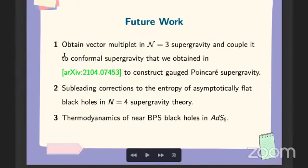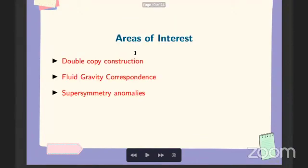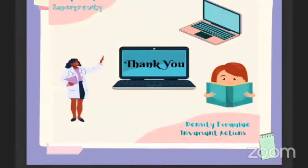For future work, and these are some ongoing work as well. So we have in this recent paper, we have constructed N equals 3 conformal supergravity action. Now currently we have obtained vector multiplet and we are trying to couple it with conformal supergravity action to obtain N equals 3 Poincare supergravity action. Other than that, we are also working on the subleading corrections to the entropy of asymptotically flat black holes in N equals 4 supergravity theories. And with Amita, we are looking at thermodynamics of near BPS black hole in ADS-6. These are some other areas of interest. So I'm interested in double copy construction, fluid gravity correspondence and supersymmetry anomalies. Thank you. Now I can take questions.